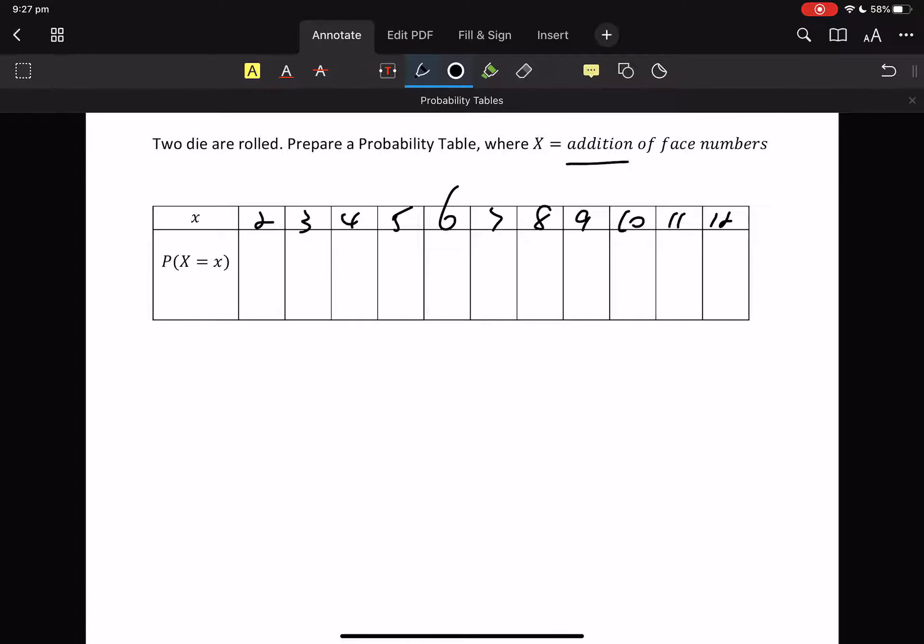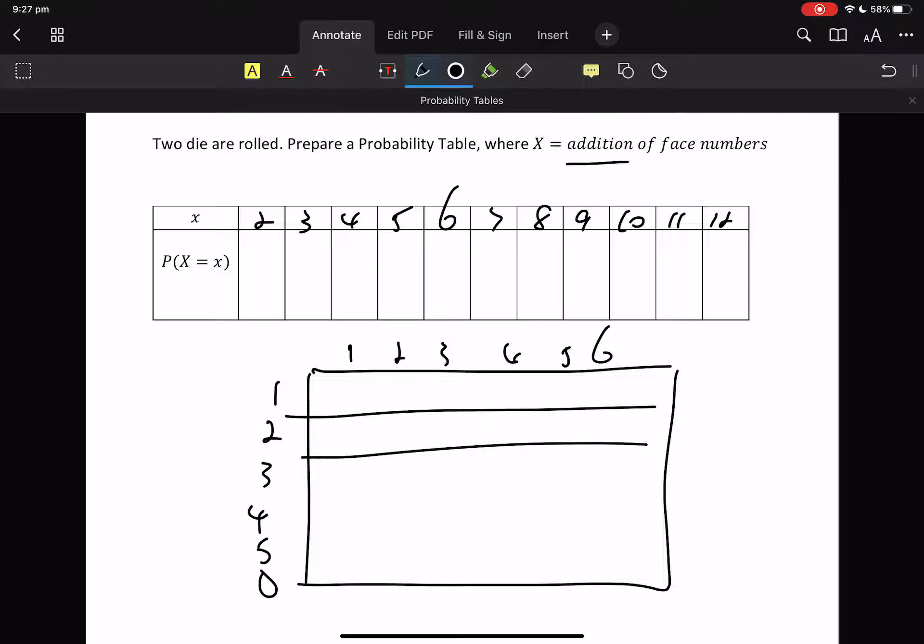So, back in grade 8, we would have done 2 things, 2 way table. So, 1, 2, 3, 4, 5, 6. That's 1 die. We're not going to get to the end of this because we don't have time.